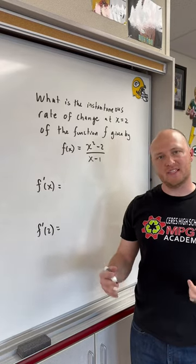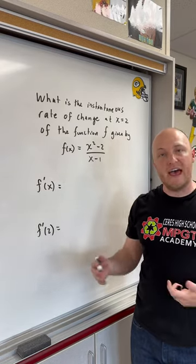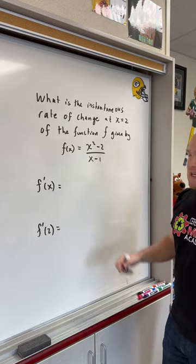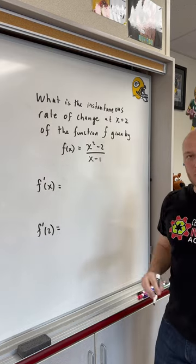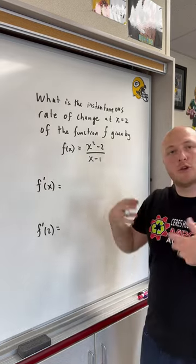What is the instantaneous rate of change at x equals 2 of the function f given f of x? Since we have one term divided by another term, f prime of x utilizes the quotient rule.